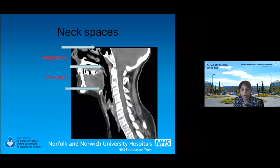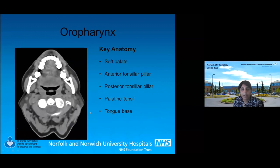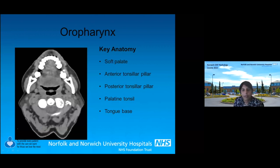Moving on to the oropharynx — from the soft palate to the hyoid bone. Key anatomy on CT includes the soft palate including the uvula, the anterior tonsillar pillar and the posterior tonsillar pillar — these are actually muscles, part of the soft palate — and then the palatine tonsils and tongue base.